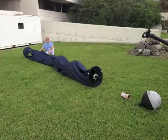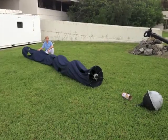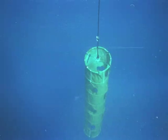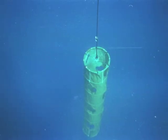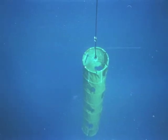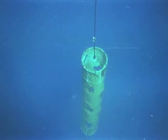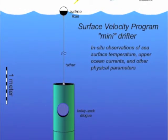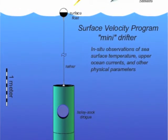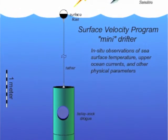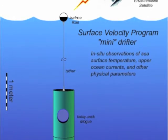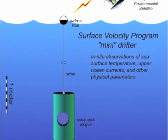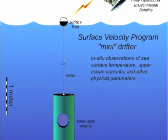The satellite-tracked drifter has a drogue hanging below a surface float. The drogue, or sea anchor, is centered at a depth of 15 meters to minimize the effect of wind on the drifter, so that the drifter measures the ocean currents near the surface. Near the surface, the float has a thermistor, or thermometer, which measures ocean temperatures.